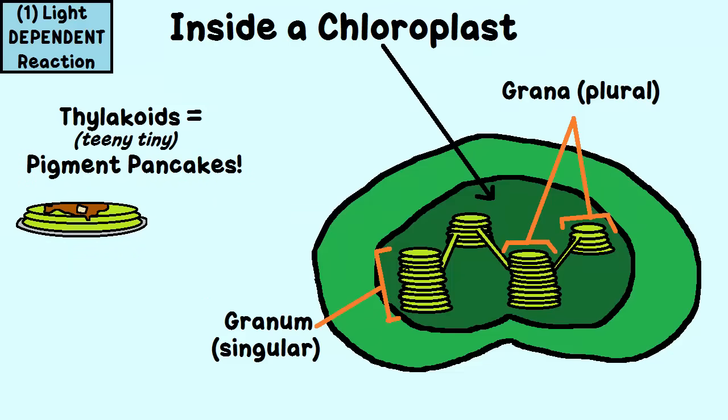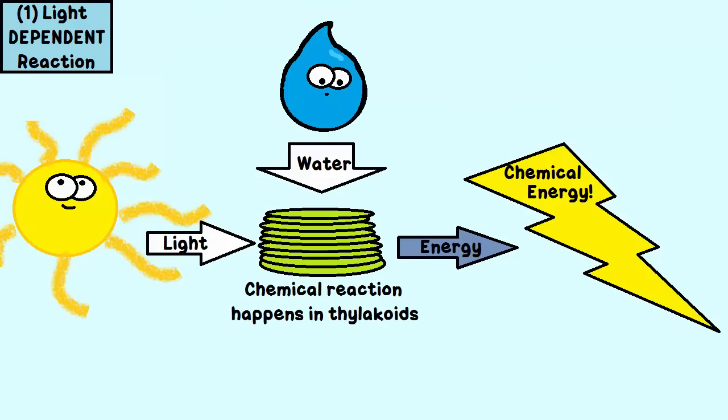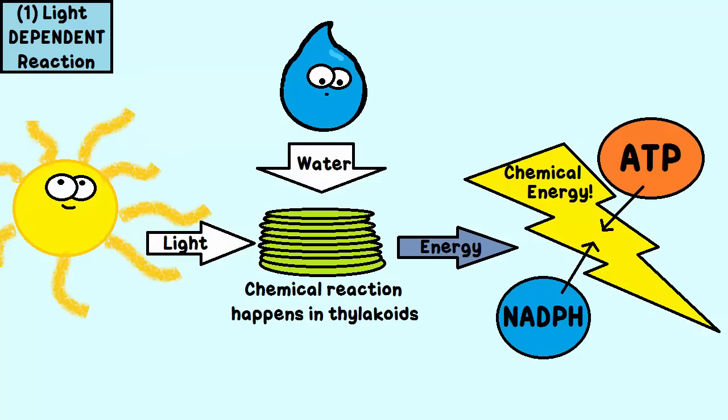In the light-dependent reaction, light is converted by means of a complex process that involves multiple photosystems into chemical energy. By chemical energy, I mean ATP, we've mentioned that before, that's energy, and NADPH. We'll get to that later.